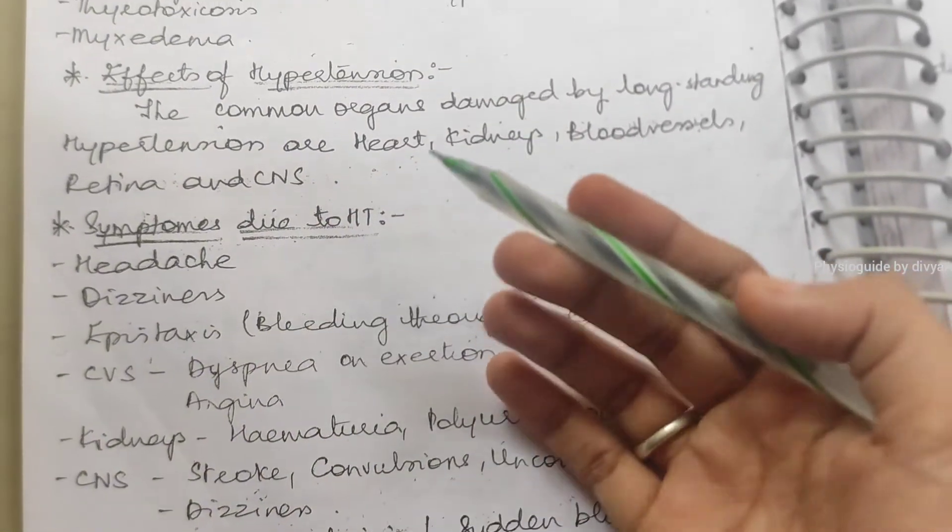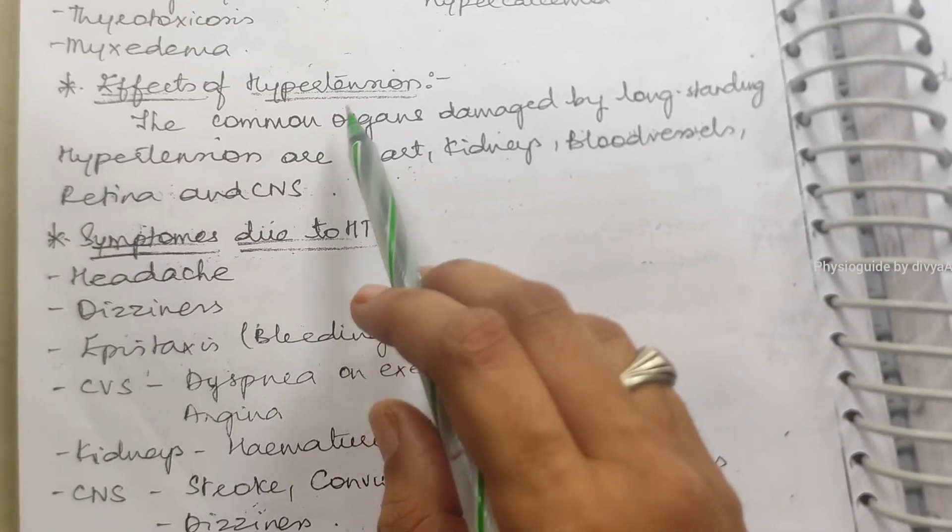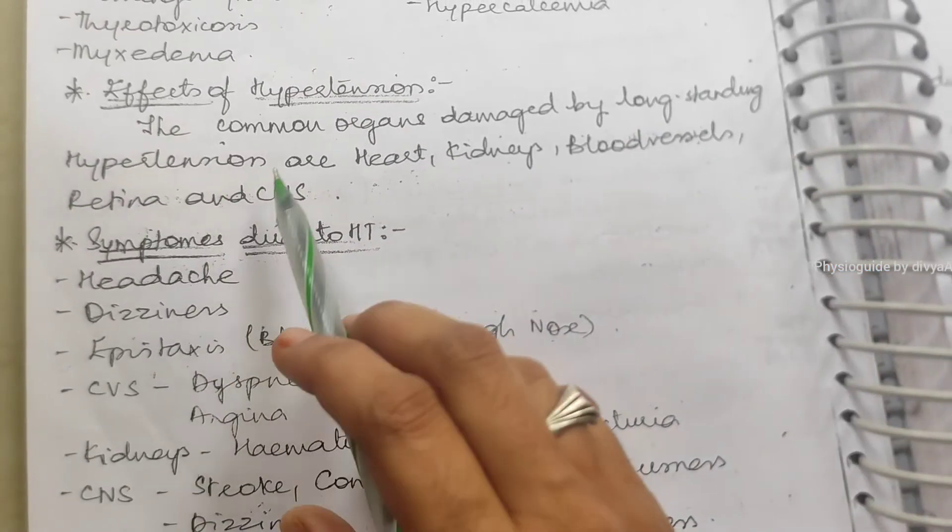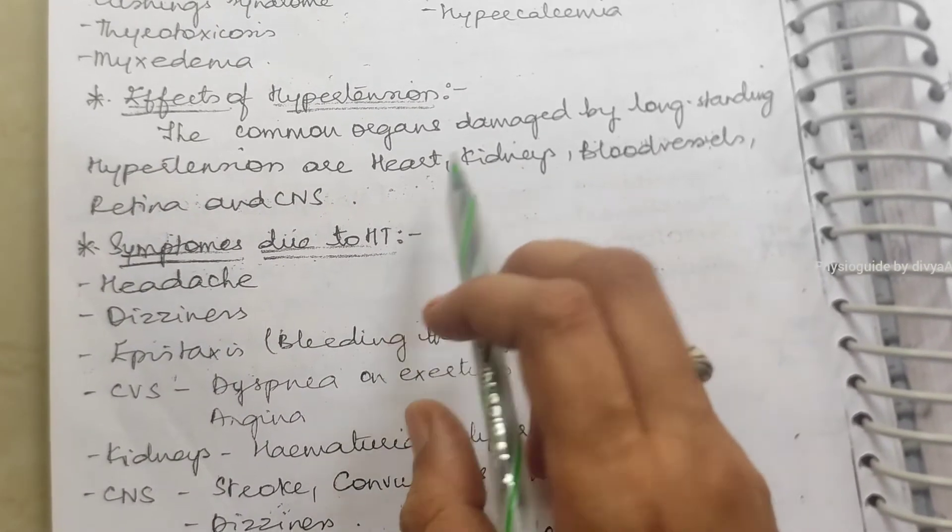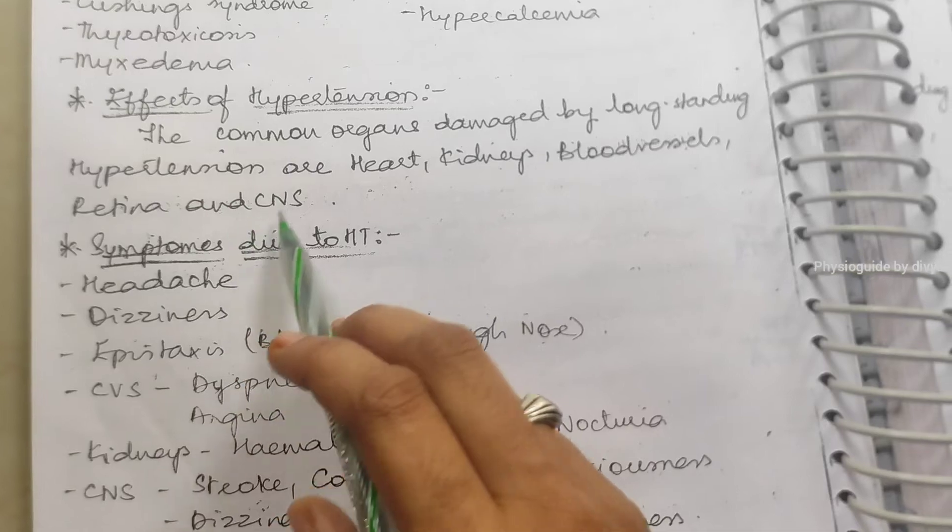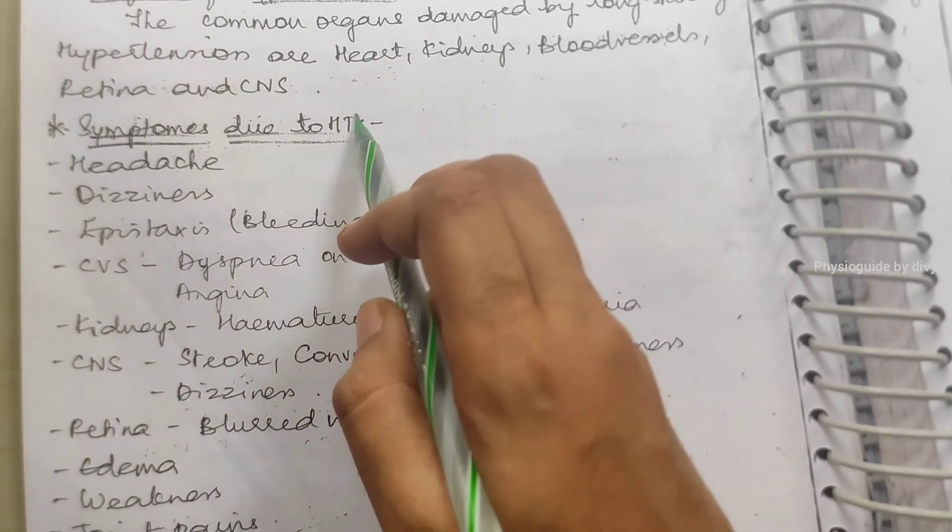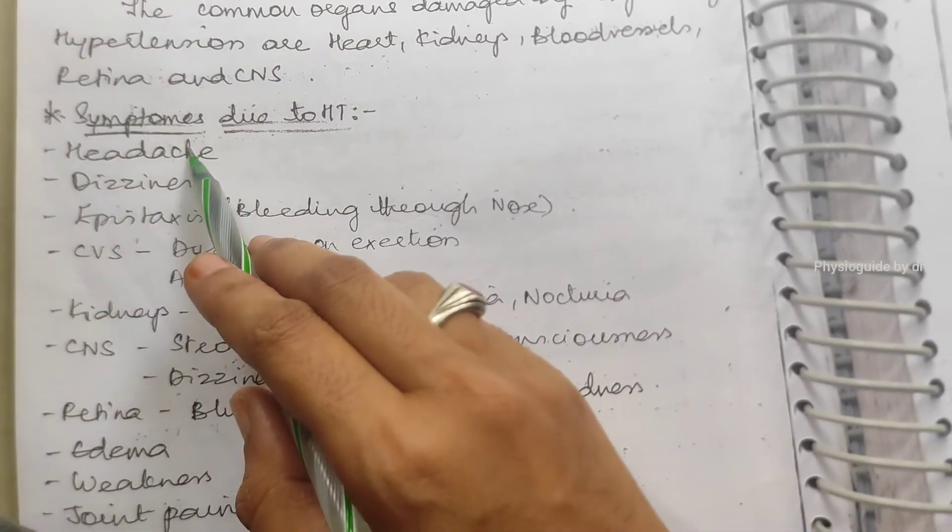What are the effects of hypertension? What will happen by this hypertension? The common organs damaged by long-standing hypertension are kidneys, heart, blood vessels, retina, and central nervous system also get affected.